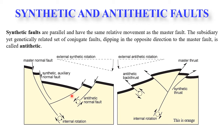Similarly, for thrust systems, faults parallel to the master thrust are synthetic thrusts, while faults with movement opposite to the master thrust are antithetic thrusts or back-thrusts. A back-thrust moves in the direction opposite to the main thrust.